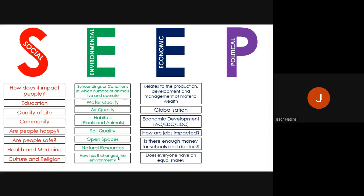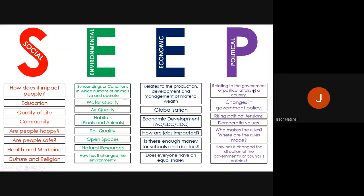For economic impacts and conditions, what we're really talking about is wealth, money and jobs. This includes globalization and how the world is more connected than it ever has been, looking at ACs, EDCs and LIDCs — those three different types of economically developed countries — how jobs are impacted by changes in society, money in terms of schools, education and healthcare overall, and equality — whether everybody in a society has an equal share of wealth.